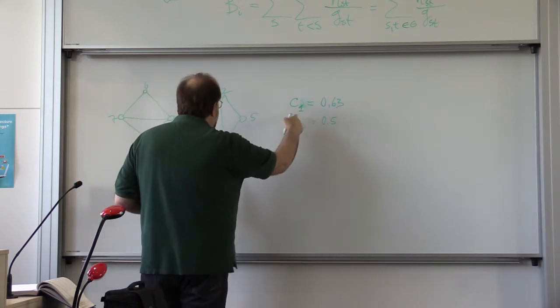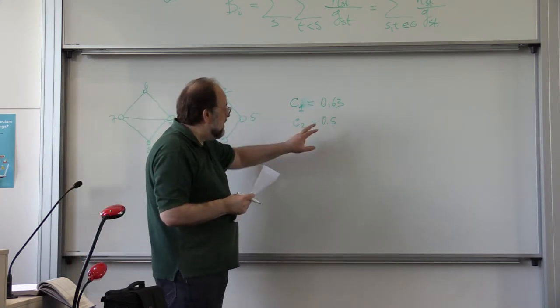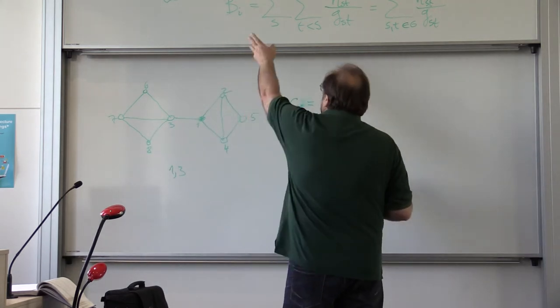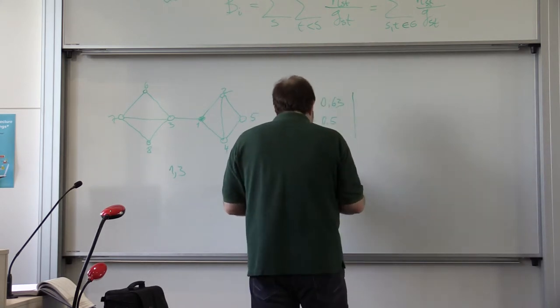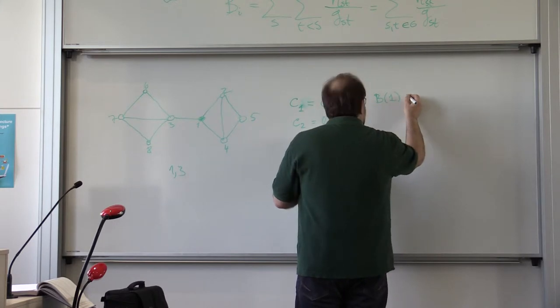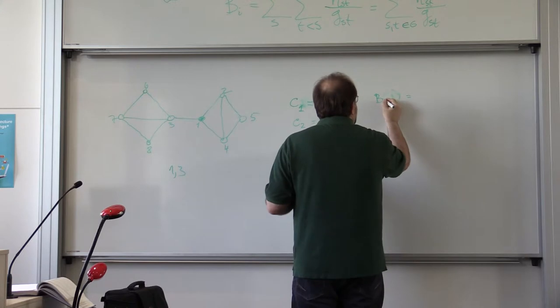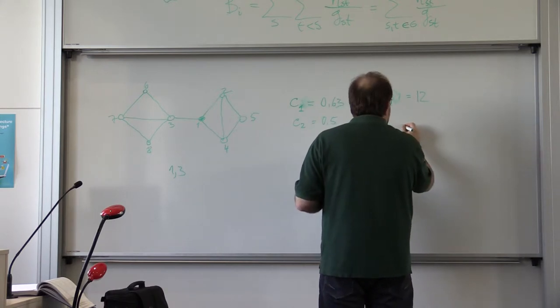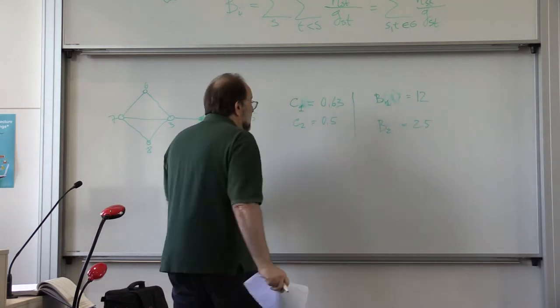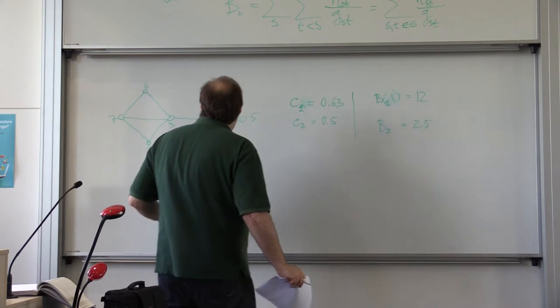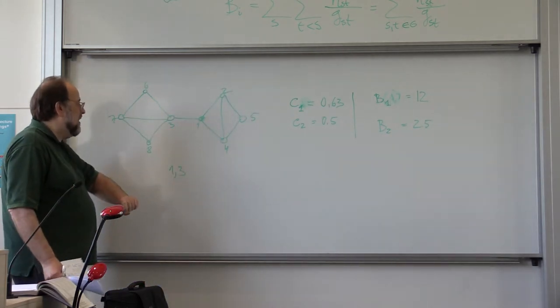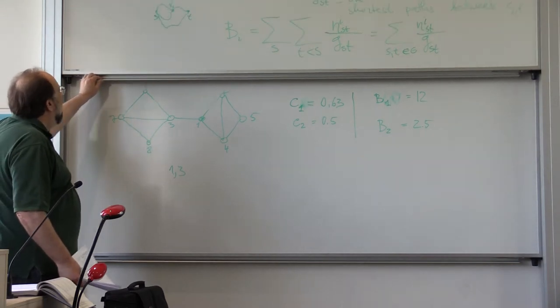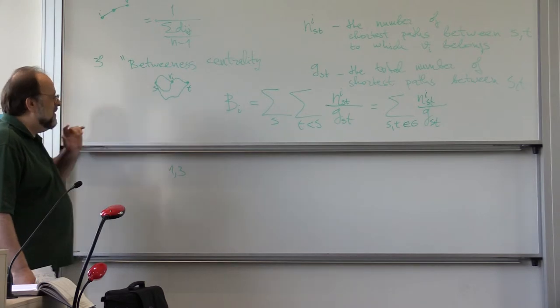On the other hand, for the same graph, you can verify, apply this formula as a homework. It turns out that b sub 1, betweenness centrality, is 12, and betweenness centrality of 2 is only 2.5. And this, you can see, reflects much better our intuition that 1 is more central to this graph than 2. So in applications, in fact, this measurement is preferred.